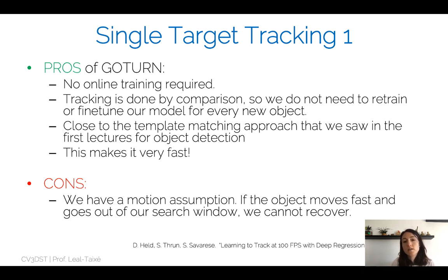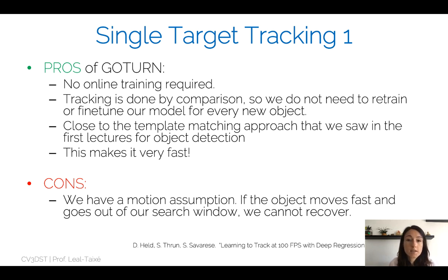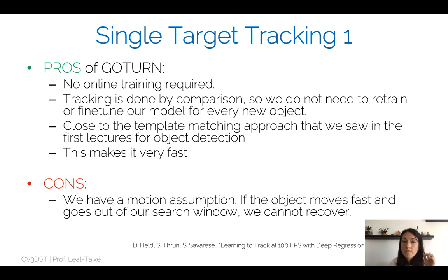Tracking is done by comparison: the Siamese neural network compares the previous patch with the current patch and tells you where the object has moved. This is close to template matching — you have a template of your object and find the same object in subsequent frames, making everything very fast. The problem is the strong motion prior: the assumption that the object moves smoothly and slowly. If the object moves very fast, it will leave our search window and the features there will just depict background.